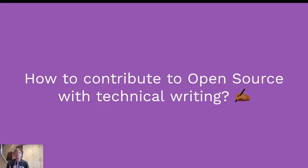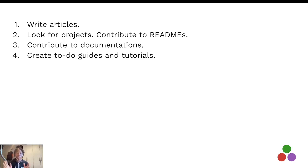So how can you contribute to open source with technical writing? One way is to write articles. We have a lot of packages and projects in the Julia community — you can pick one and write about it. You can build something with Pluto.jl or Franklin, or use any of these packages and write about it. That is one way to contribute to open source through technical writing, and you are promoting the Julia community.